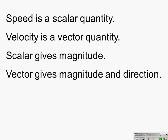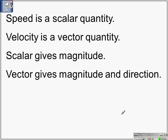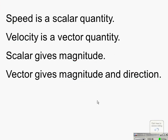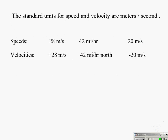Magnitude simply means size — so whenever you see that word, substitute 'size' or 'amount.' Speed gives me an amount or a size, and so does velocity, but velocity also adds direction. Therefore velocity is a vector quantity. That's the major difference between speed and velocity: one's a vector and one isn't, one gives direction and one does not, one uses distance and the other uses displacement.